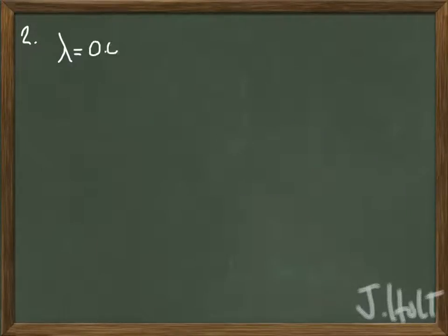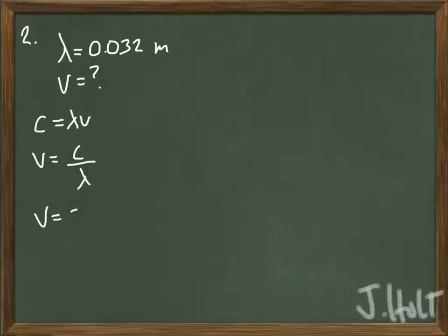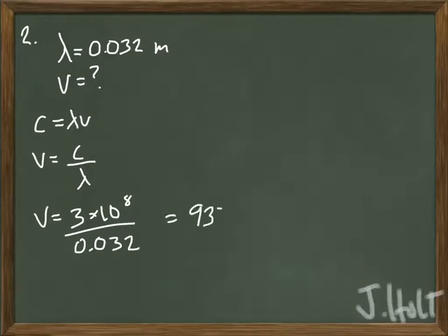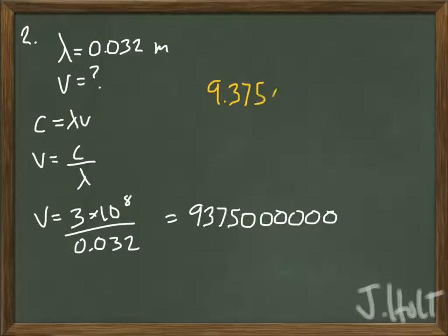In number 2, we're given the wavelength of a microwave. It's already given in meters, so we don't need to convert anything. We're going to use the same equation as last time, because just like last time, we want the frequency. So we plug in the speed of light and divide it by the wavelength, and we'll get the frequency. It's going to give you a big number like this, so you want to go ahead and put it into scientific notation.